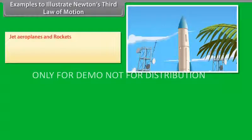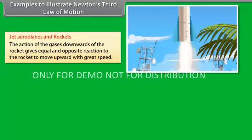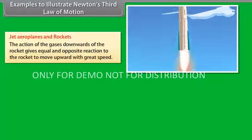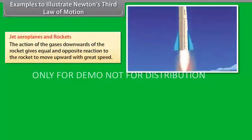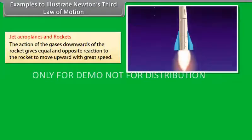Jet airplanes and rockets: The action of the gases downwards of the rocket gives equal and opposite reaction to the rocket to move upward with great speed.